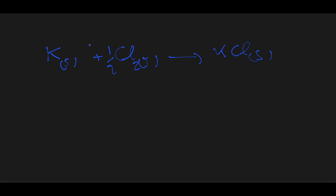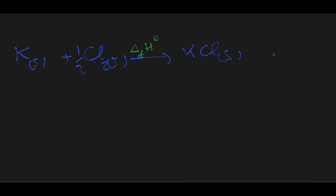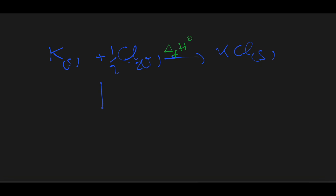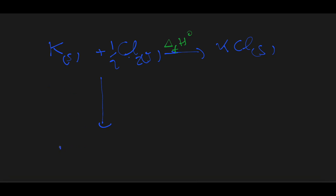Here we have the equation for the formation of KCl from its elements. For potassium, the standard state is the solid state, and for chlorine it is the gaseous state as Cl₂, giving KCl in solid state. The standard enthalpy of formation corresponds to delta HF for KCl. To get the lattice energy, we move through an indirect path, first changing each substance to a gaseous state as isolated atoms. For potassium, we need to change it to potassium in gaseous state, which requires an energy called the sublimation energy.